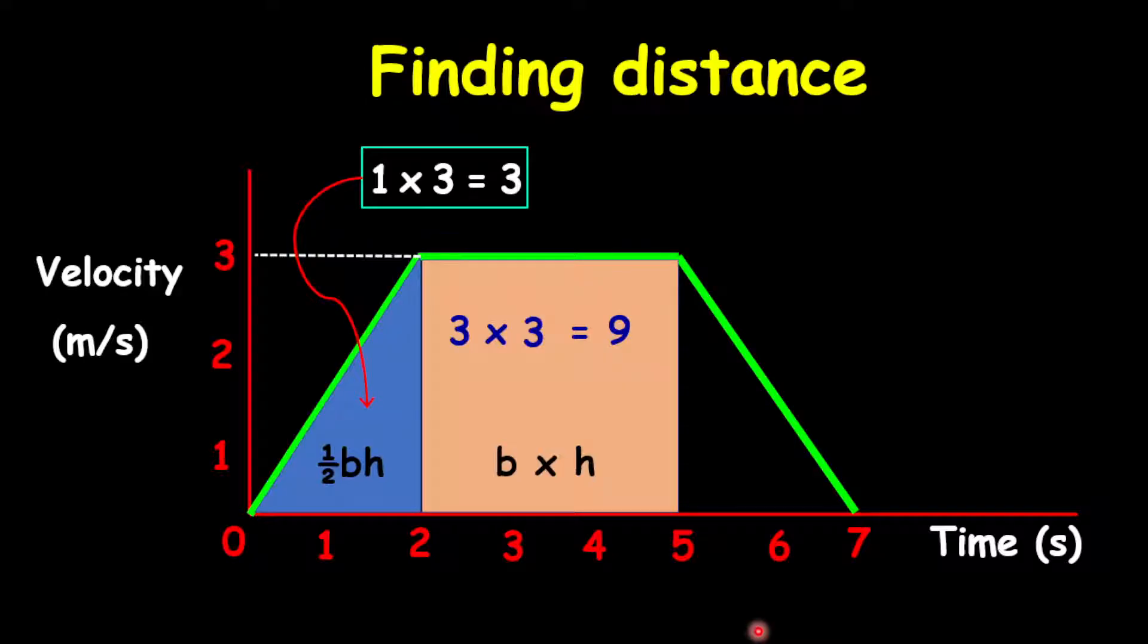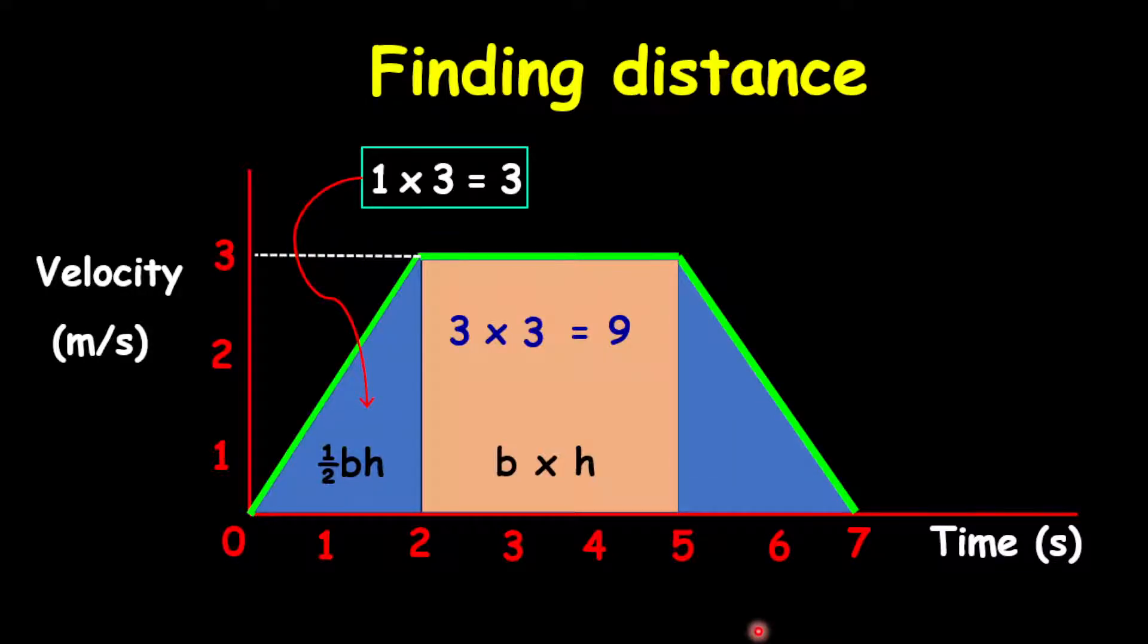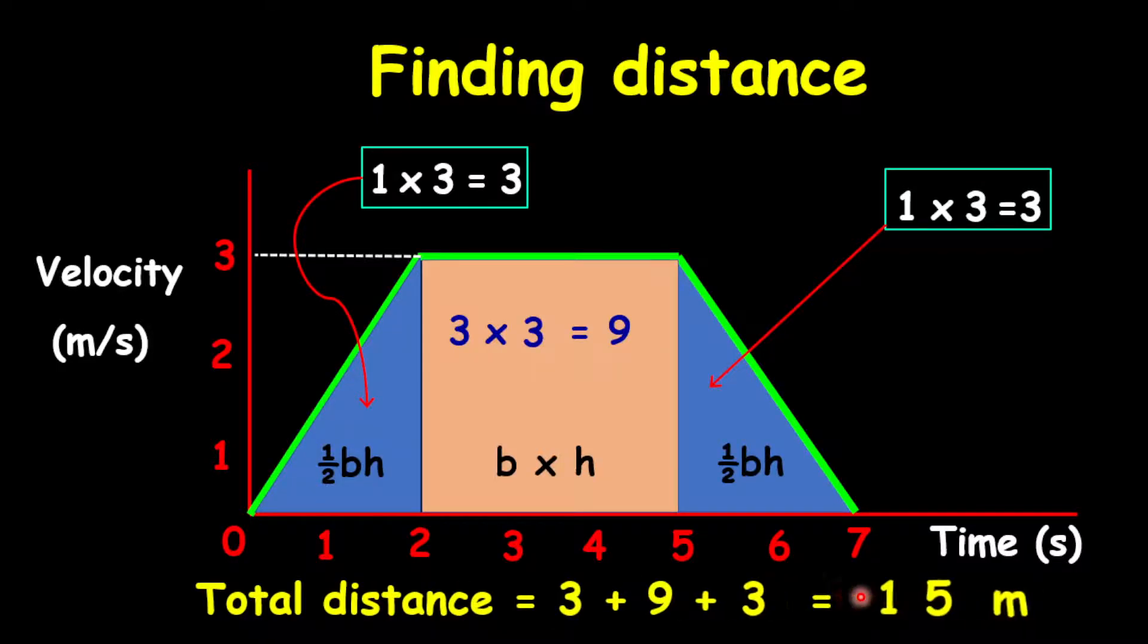For the last part of the green line, it's also a triangle. To calculate this is half base times height. The base here is actually from 5 to 7, which is 2 seconds. Therefore, half of 2 is 1, multiplied by our height, which is 3 meters per second. Therefore, here will be a value of 3 meters. If you should put all of these together, what you'll have as a total distance is 3 plus 9 plus 3, which equals 15 meters for the entire journey.